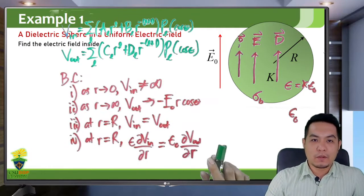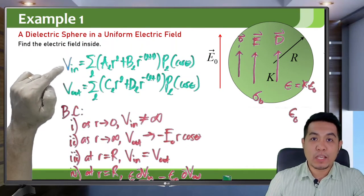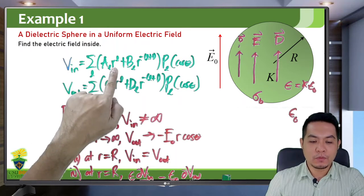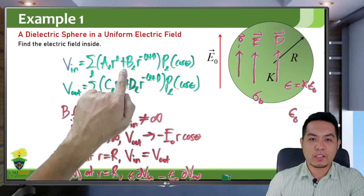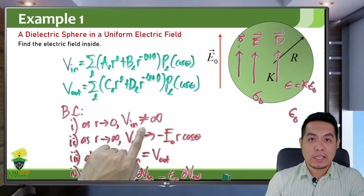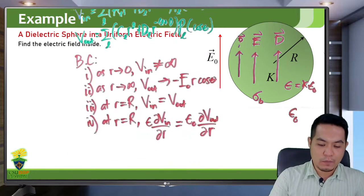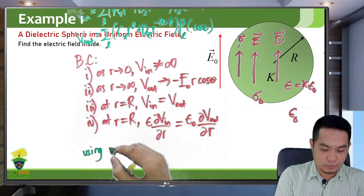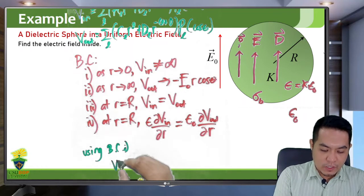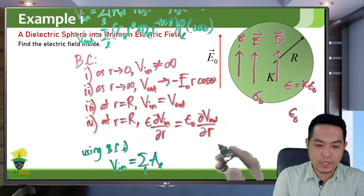If you apply boundary condition 1 on the general potential inside — as R approaches 0 — the R to the L term becomes 0, but the R to the negative L+1 term becomes infinite. Since our condition requires the potential to stay finite, we must set all the B_L coefficients equal to 0. Using boundary condition 1, the potential inside reduces to just the A_L terms; all B_Ls are zero.